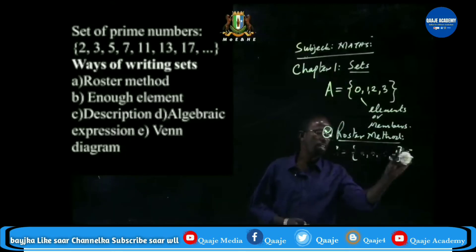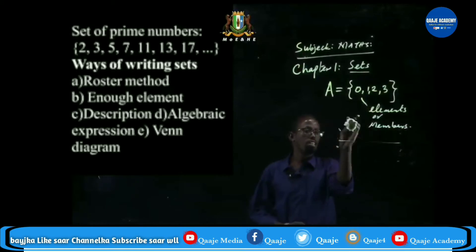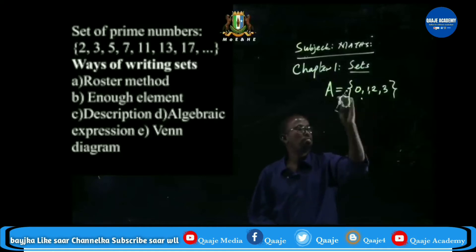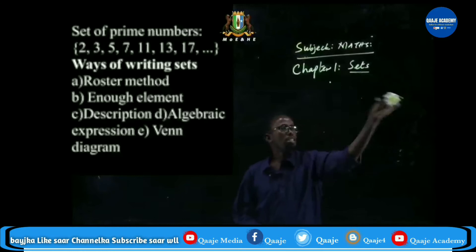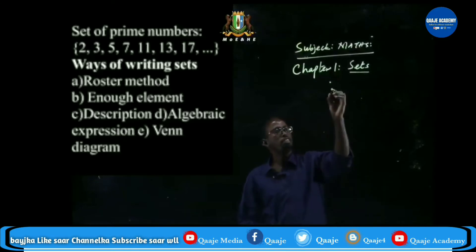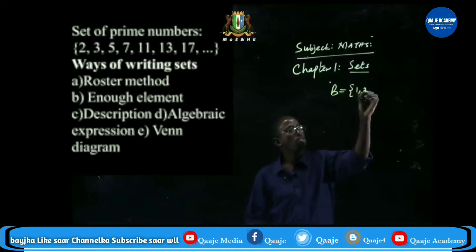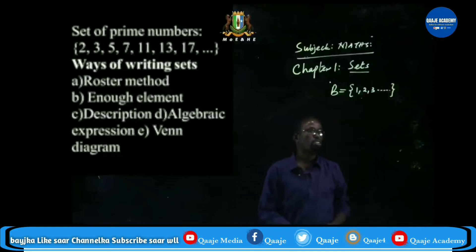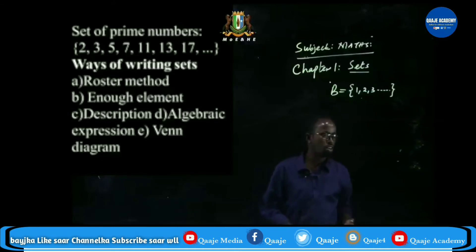Another way of writing a set is listing enough elements. For example, set B contains {1, 2, 3, ...} and so on. This is another way of writing sets — you list part of the elements instead of writing all of them.